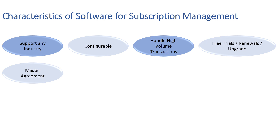Large enterprise and B2B sales require a master agreement construct in which global terms and conditions are negotiated once and then inherited with minor tweaks by subsidiaries for their own subscription orders. Core SAP has a master contract feature to handle this.